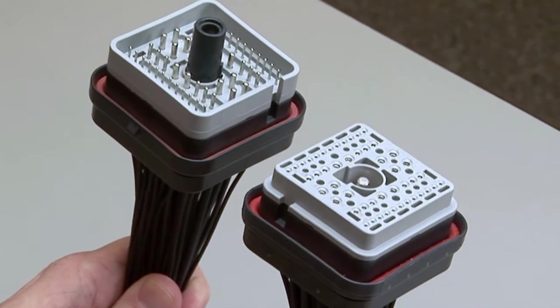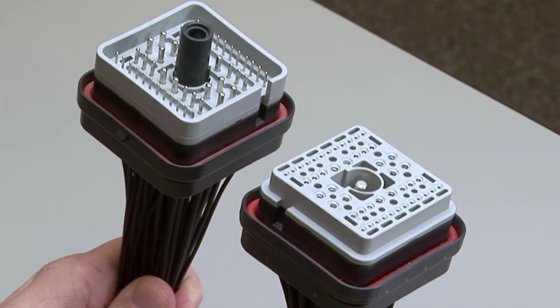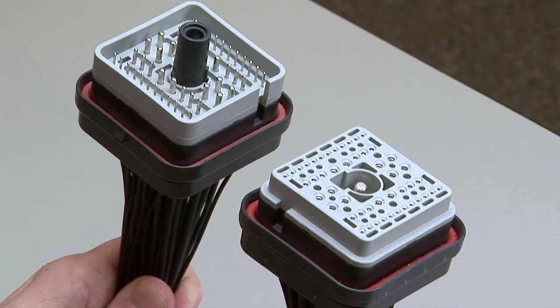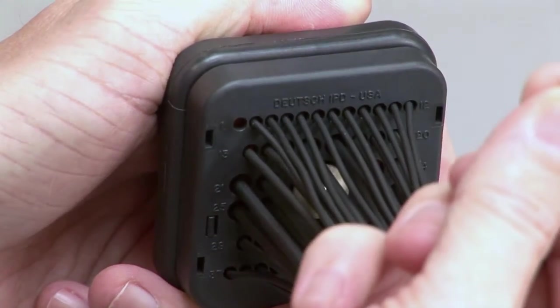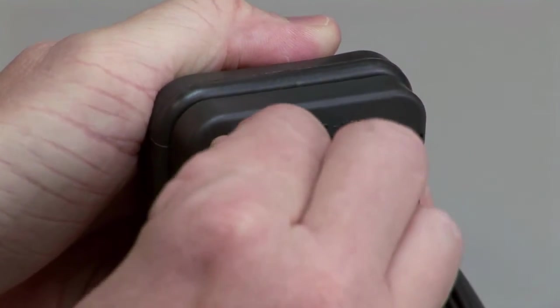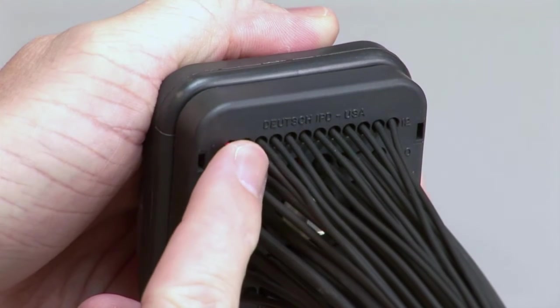Repeat the same process for the receptacle and the plug halves of the connectors. Make sure to insert the contacts into the rear grommet. Please note that if you have open cavities, they will need to be filled with appropriately sized sealing plugs.